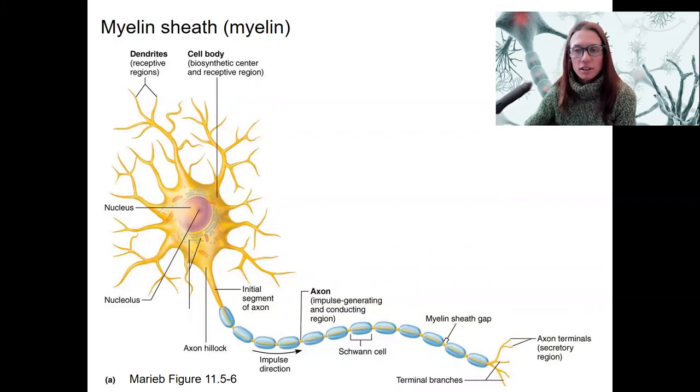So here is another picture of a neuron with all the components I drew before. Nucleolus is a different one right inside the nucleus.